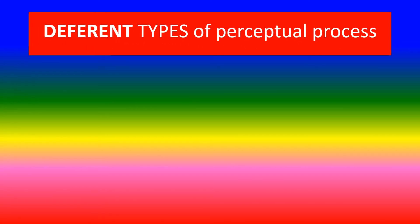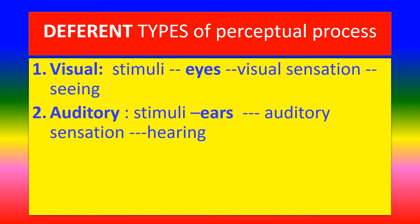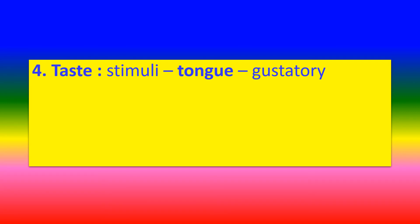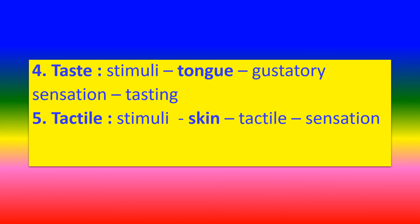Different types of perceptual processes: First, visual — visual stimuli, eyes, visual sensation, and seeing. Second, auditory — auditory stimuli, ears, auditory sensation, and hearing. Third, smelling — fragrance, nose, olfactory sensation, and smelling. Fourth, taste — taste stimuli, tongue, gustatory sensation, and tasting. Fifth, tactile — tactile stimuli, skin, tactile sensation, and feeling of touch.